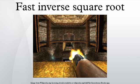The algorithm accepts a 32-bit floating-point number as the input and stores a halved value for later use. Treating the bits representing the floating-point number as a 32-bit integer, a logical shift-right of one bit is performed and the result subtracted from the magic constant 0x5f3759df. This is the first approximation of the inverse square root of the input. Treating the bits again as floating-point, it runs one iteration of Newton's method to return a more precise approximation, computing the result approximately four times faster than floating-point division.